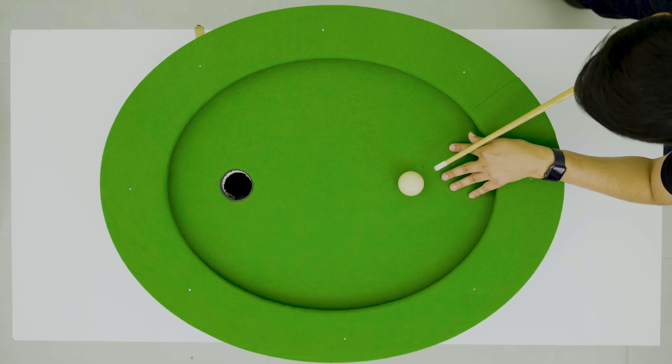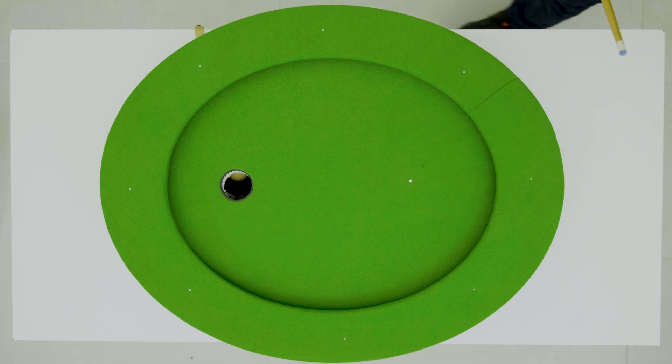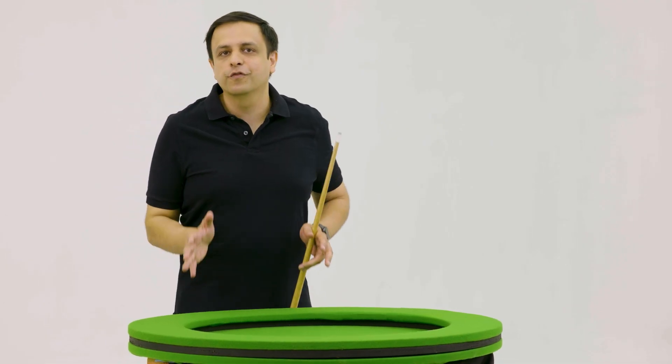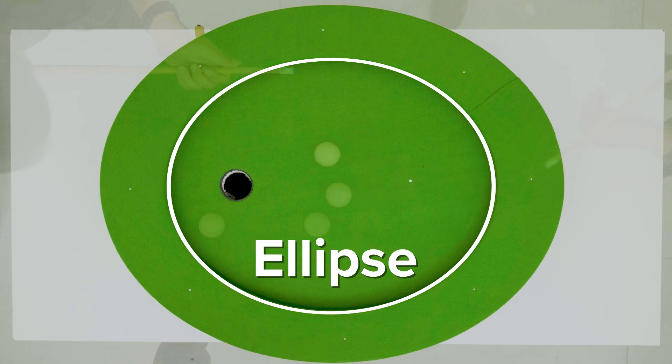No matter where I hit this ball, it always falls into this hole. That's because of the beautiful shape of this table. An ellipse, sort of a stretched circle.